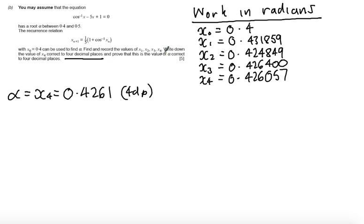So the last part says prove that this is the value of alpha correct to four decimal places. So if we say that our function f of x, which is equal to 0, is cos to the minus 1 of x minus 5x plus 1.